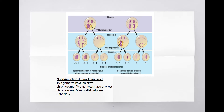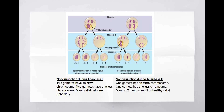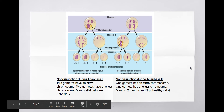In Anaphase 1, if non-disjunction occurs, we end up with four very unhealthy cells. If non-disjunction occurs during Anaphase 2, it's a little less dangerous because you do produce some healthy cells. One cell goes through anaphase properly and one cell does not, resulting in two healthy cells and two unhealthy cells - one with one too many chromosomes and one with one less. Please write this information down in the chart in your notes.